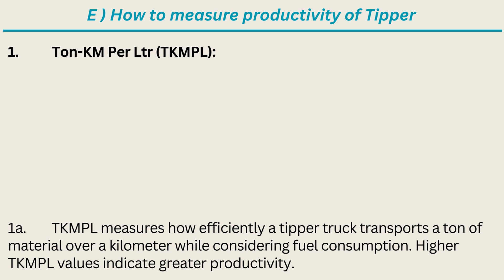1. Ton Miles Per Gallon (TMPG): TMPG measures how efficiently a tipper truck transports a ton of material over a mile while considering fuel consumption. Higher TMPG values indicate greater productivity.